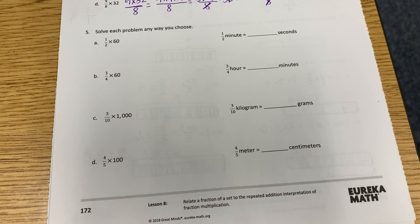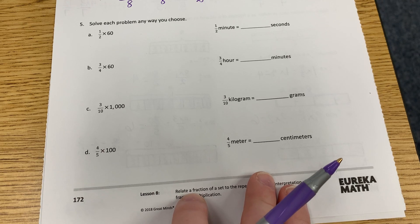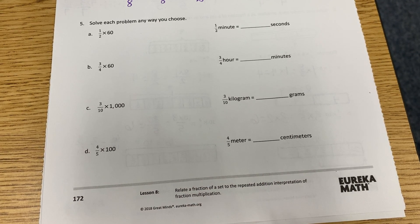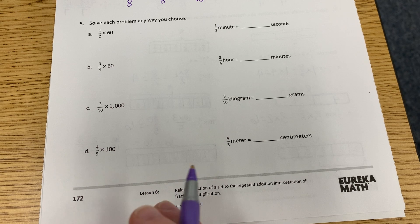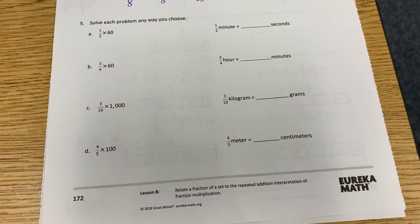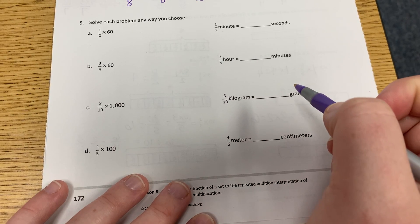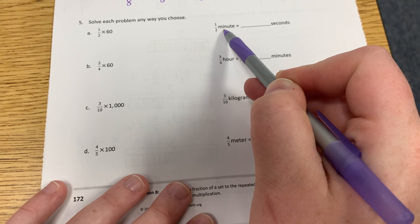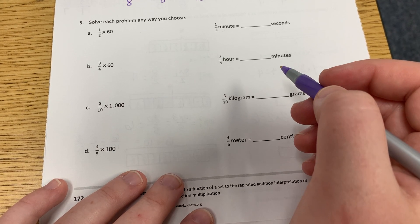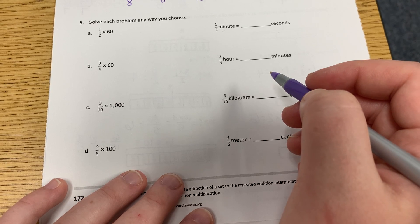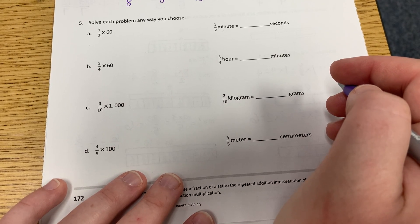Okay, so it says number seven, solve each problem any way you choose. Well, we're not going to do tape diagrams. We're done with the tape diagrams for right now, but we are going to do what we did on Friday. So we said a, well, the first question says one half times 60. Well, I know that it wants to know if we look over here, how many seconds are in a minute? Well, how many seconds are in a minute? 60 seconds are in one minute, right? So we know that off the top of our head. How many minutes are in one hour? 60. So we're just going to keep that in mind because we may need to know it in a little bit. But we have one half times 60.